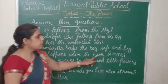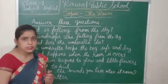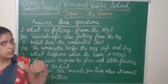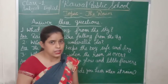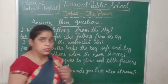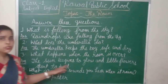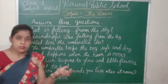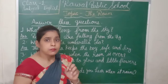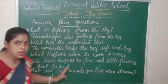What happens when the rain is over? When raining stops, what happens? The sun appears in the sky once again and flowers begin to grow everywhere. Sun begins to glow and little flowers start to bloom. Do you know about 'bud'? B-U-D, bud — it means 'Kali.' So little flowers start from the bud.